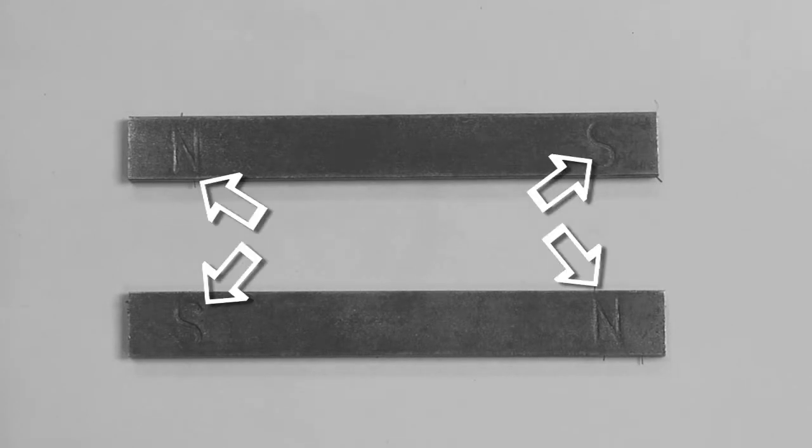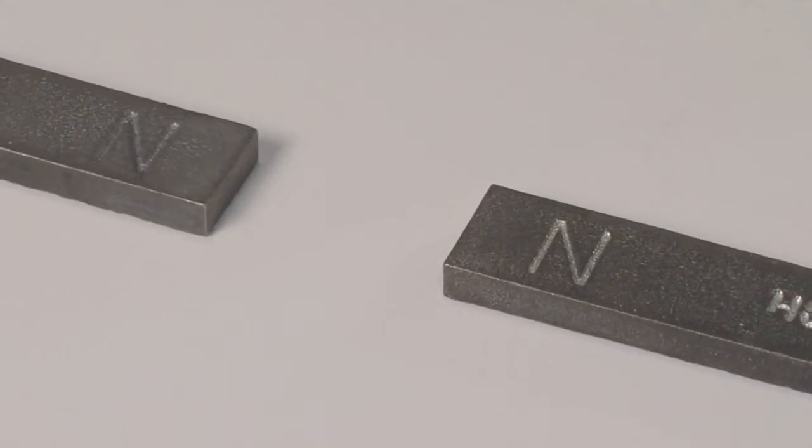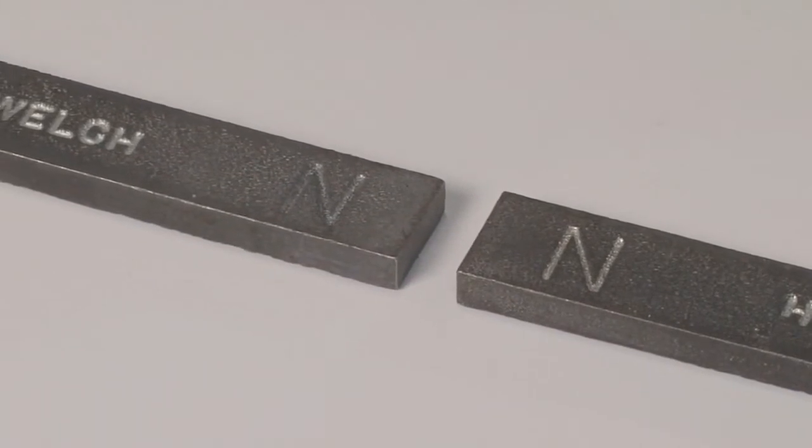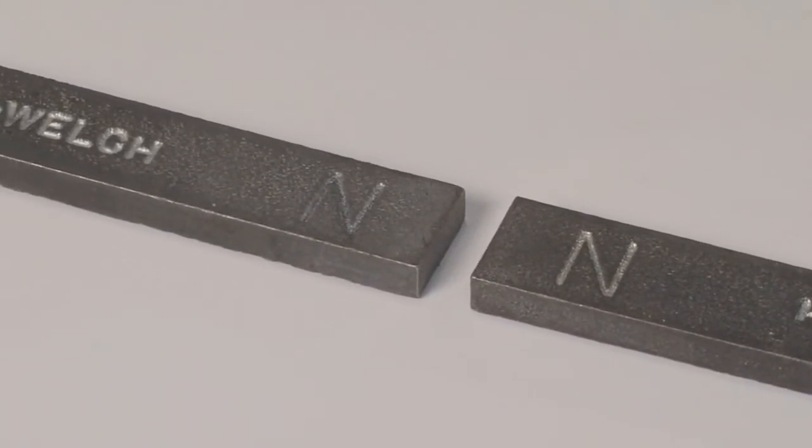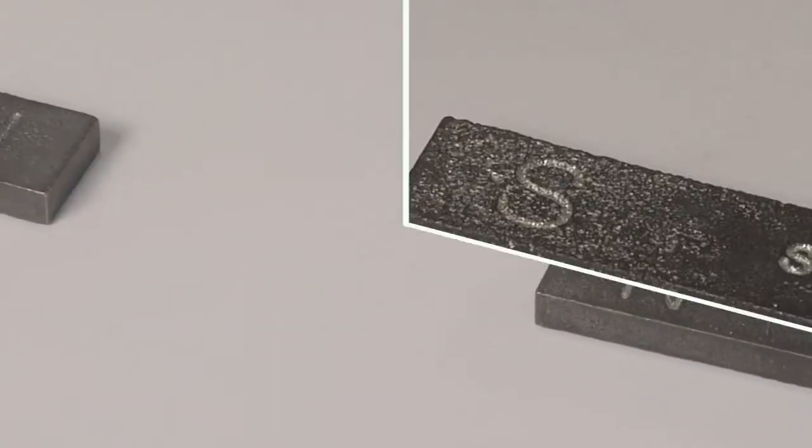Now look at the ends. Do you see the markings? Take these two bar magnets and bring the two ends marked with the letter N close together. Do you notice something? The two ends marked with the letter N tend to repel or push each other away.